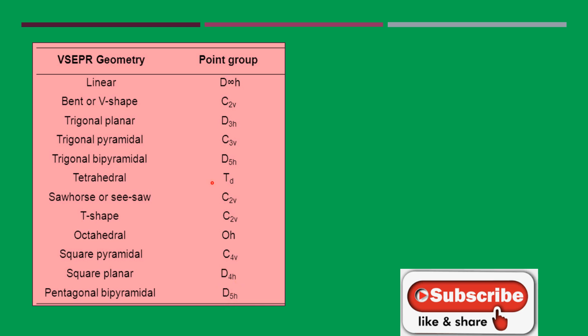Now I will take one example to show how to do it in the exam. The example is XeOF4. First trick: find the number of lone pair of electrons. The outermost valence electrons for xenon is 8, minus the number of bonds — that is 4 — but since oxygen is a divalent ligand you do minus 2, giving 8 minus 6 = 2, divided by 2 = 1. So there is one lone pair of electrons.